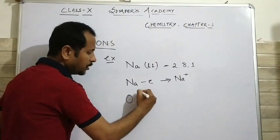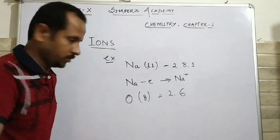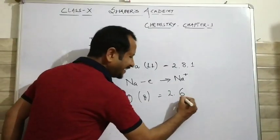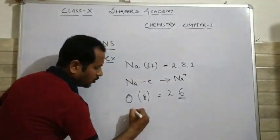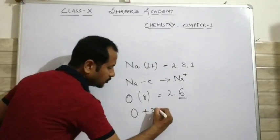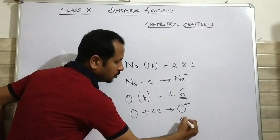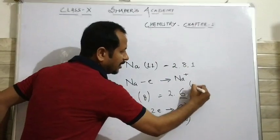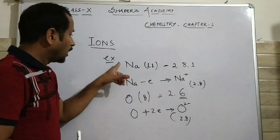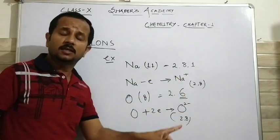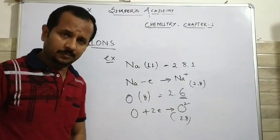Second example: oxygen. Atomic number is 8 and its configuration is 2, 6. So you can say that it needs 2 electrons to complete its octet. Oxygen will take 2 electrons and it forms oxide ion with configuration 2, 8. So ions are the charged atoms or groups of charged atoms.